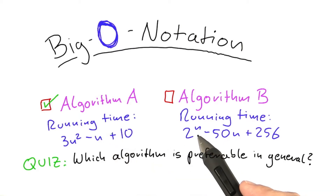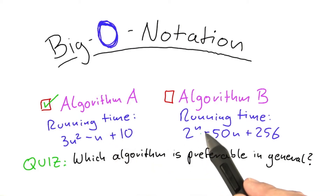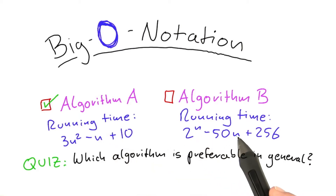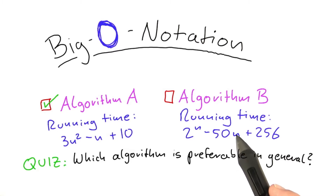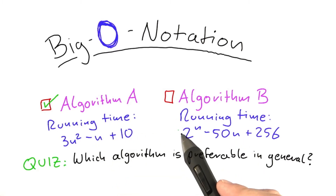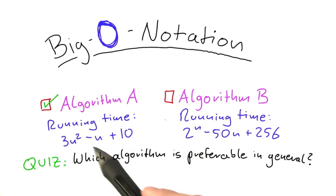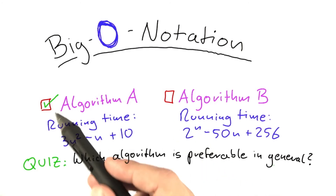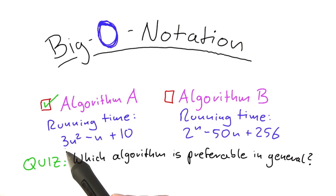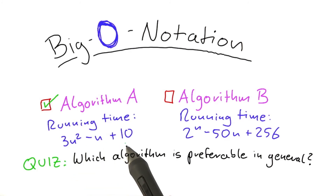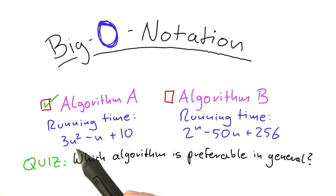And also we might be dealing with very small inputs. So if you would know that n, for example, doesn't get much bigger than 10, then those two algorithms are almost equal, or sometimes even algorithm B would be preferable. But in general, if you don't have any other information, I would go with algorithm A because the running time is much lower as long as n is not very small.